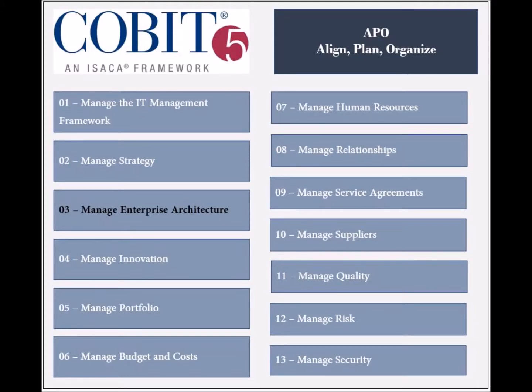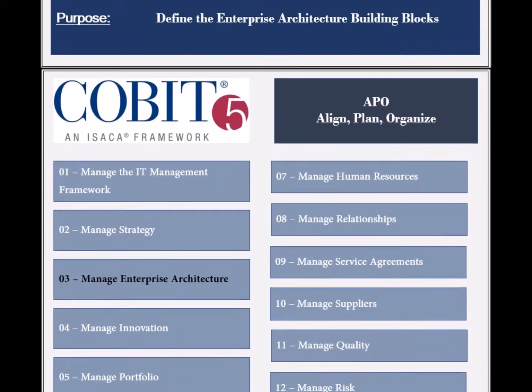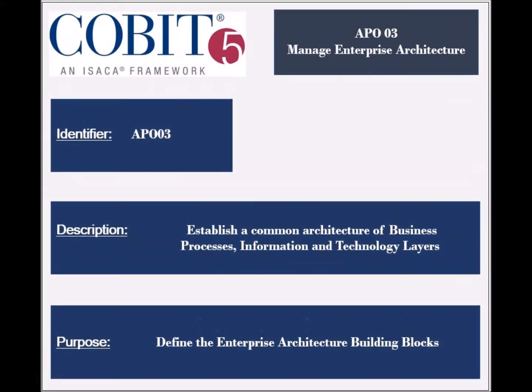The third process of the Align, Plan and Organize Domain is called Manage Enterprise Architecture. The identifier of this process is AP03.